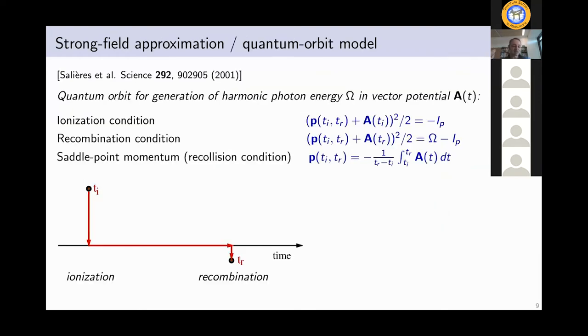The quantum mechanical version of this is also well known to many of you. We call it the strong field approximation or the quantum orbit model. Wilhelm has explained a lot about quantum orbits already in his talk. So the point here is in contrast to the classical model, times become complex. So in these equations, the Ti and the Tr are the complex time of ionization where the electron starts and the time of recombination when the electron goes back into the initial bound state. And these are the three saddle point equations that you need to solve to find these two complex times.